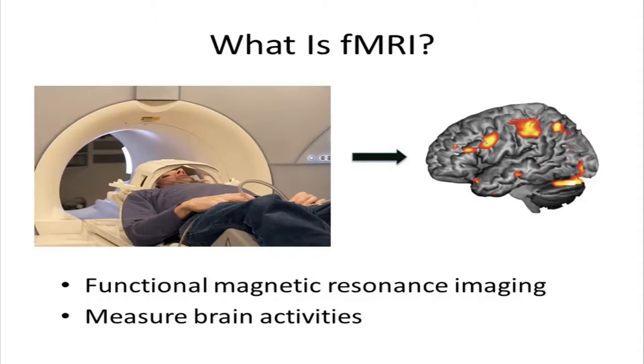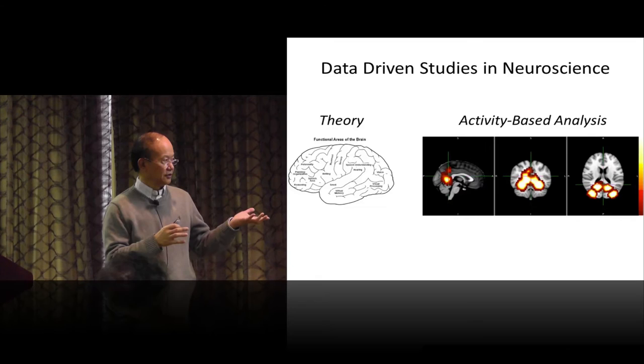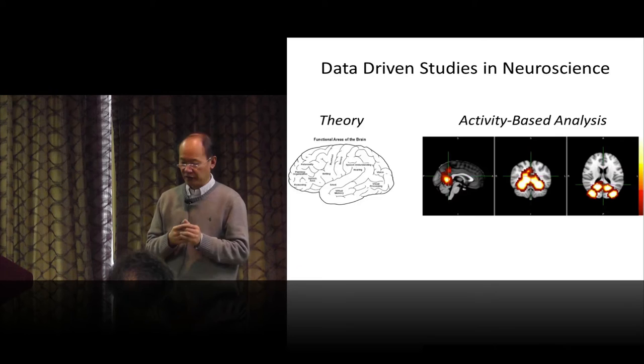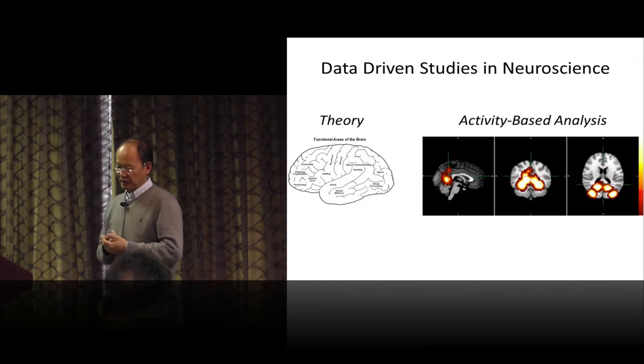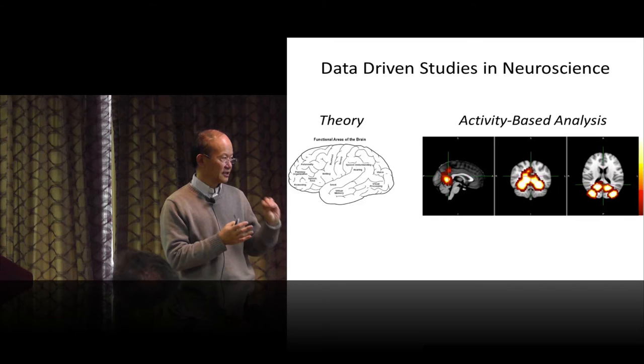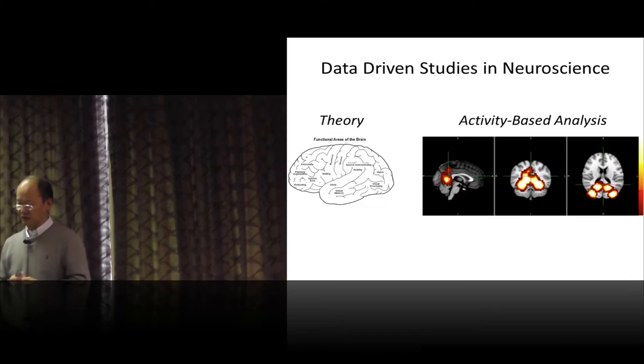So how do people do this? People have been using fMRI machines since the 90s. Typically, the traditional way of doing it is to use the so-called activity-based analysis. What they do is that in theory, in neuroscience, there are a lot of theories about which region of the brain perform what. But now with the functional MRI machine, you'll be able to look at those brain volumes and measure activities and figure out, if you're performing certain tasks, which region of the brain gets used in what way. So neuroscientists have been doing this for a long time.